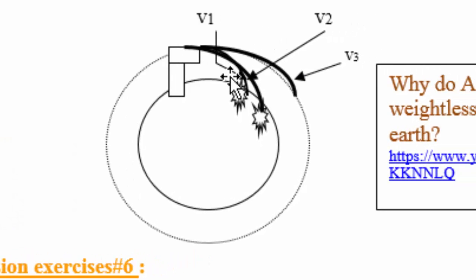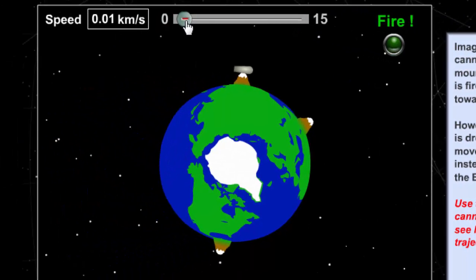Imagine a cannon firing a cannonball with high speed. Let's start with very low speed, around 0.01 kilometers per second, and you can see the cannonball will fall directly to the Earth.